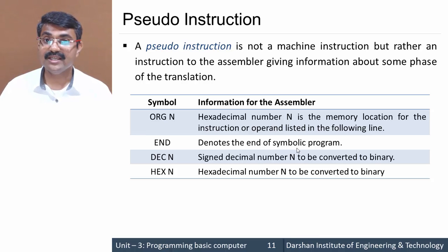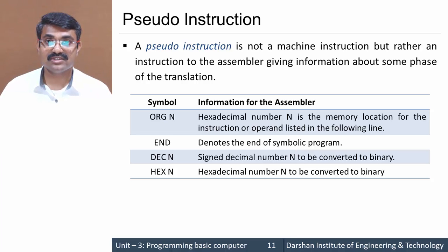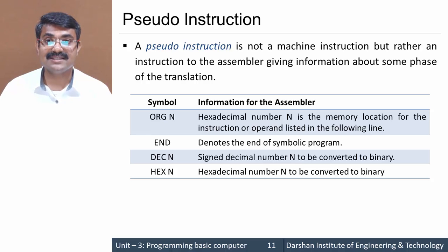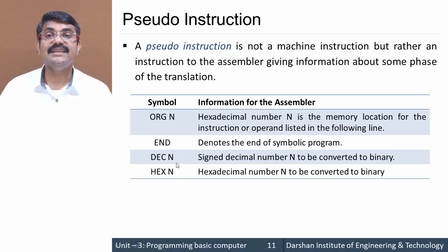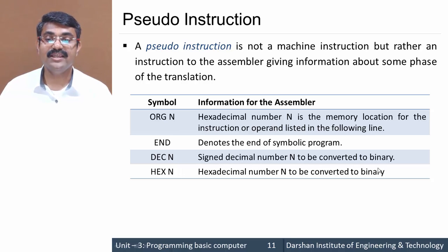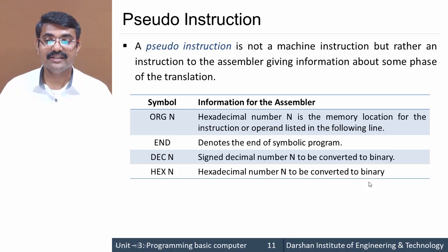Repeating the point: these are not machine instructions; they are instructions for the purpose of translation. Next we have DEC N — a signed decimal number N to be converted to binary — and HEX N — a hexadecimal number N to be converted to binary. So these four are the pseudo instructions we can use in an assembly language program.